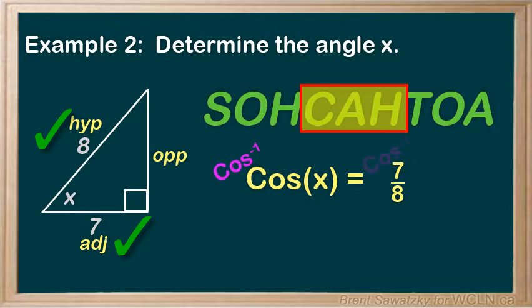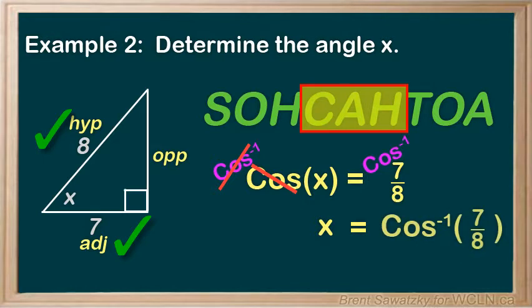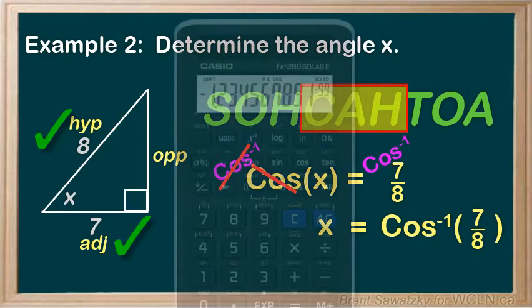The inverse cos and the cos cancel out, leaving the X by itself. Perfect. And on the right, we're left with the inverse cos of 7 over 8. Now, to solve this on most calculators, you would press Shift, then cos.